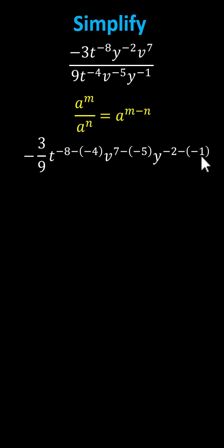Now let's begin to simplify. Negative three-ninths is negative one-third, and then we have t to the power of negative four, v to the power of positive twelve, and y to the power of negative one. Notice I wrote the variables as a fraction with the denominator of one because of the negative one-third.